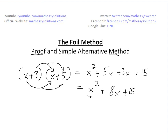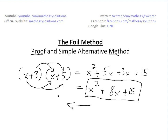Just a side note: factoring is the reverse of this. So if you were to go backwards from x squared plus 8x plus 15 back to the bracketed form, that is called factoring — it's reverse foiling.